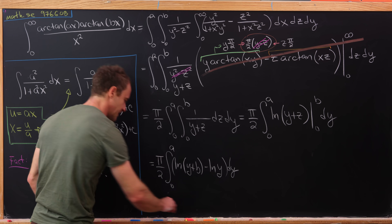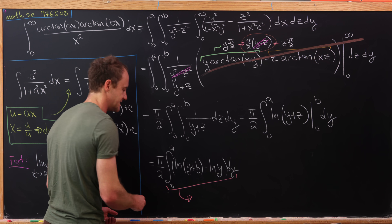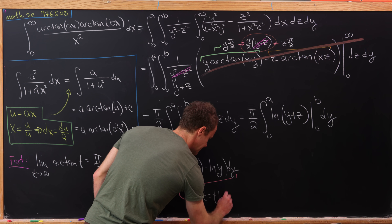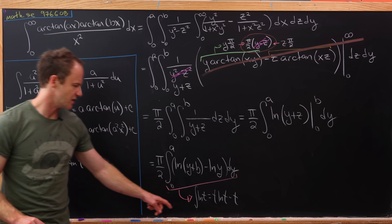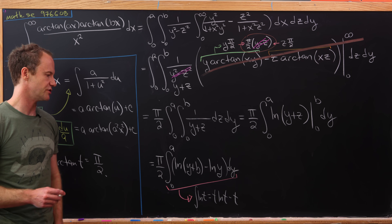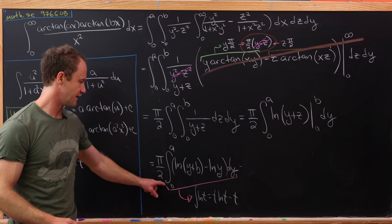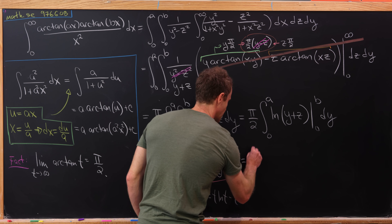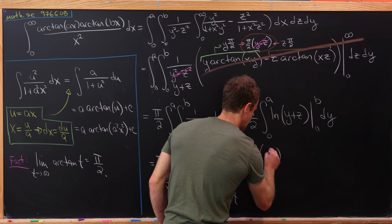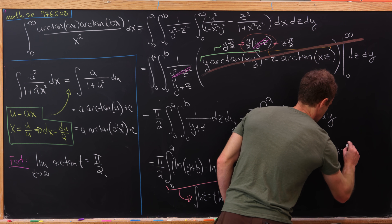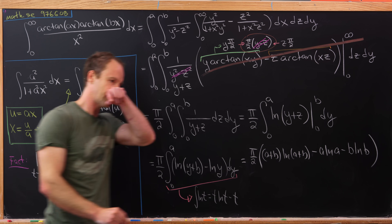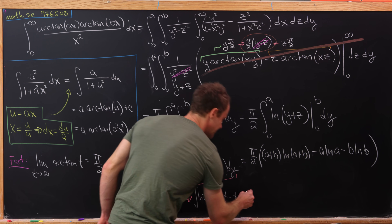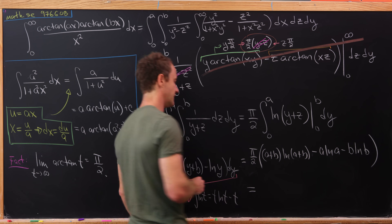These antiderivatives are a little tricky but can be done with integration by parts. The antiderivative of ln(t) is t times ln(t) minus t. Using this antiderivative and plugging in the endpoints — you'll need to use a limit for the lower bound at some point — we get pi over 2 times (a plus b) ln(a plus b) minus a ln(a) minus b ln(b). And we can put all of this together to get a really nice aesthetic version of this value.